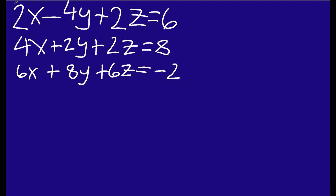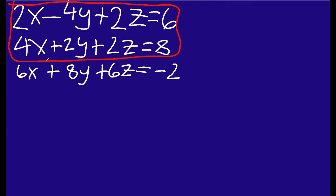I'm going to take these first two equations and eliminate the Y variable. Here in the first equation I have a negative 4Y, and in the second I have a positive 2Y. If I multiply the second equation by 2, I will get a positive 4Y. Then I add these two equations together — positive 4 and negative 4 cancel each other out, and I'll be able to eliminate my Y variable.